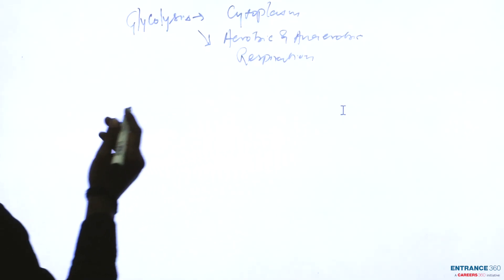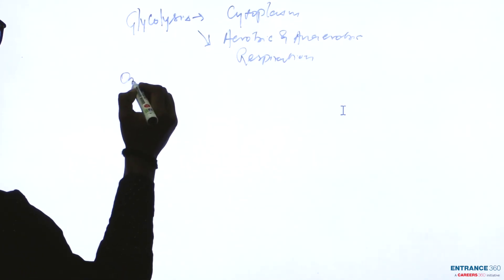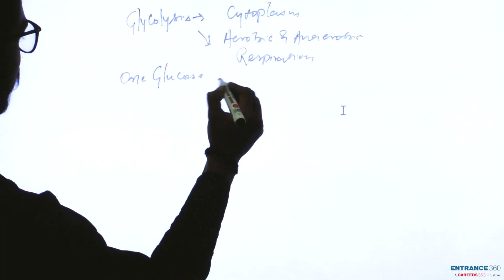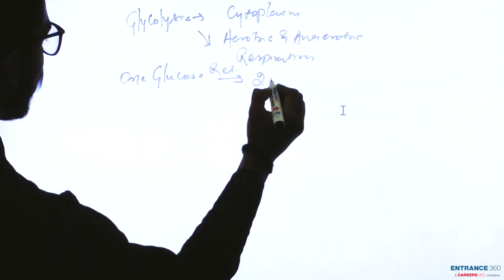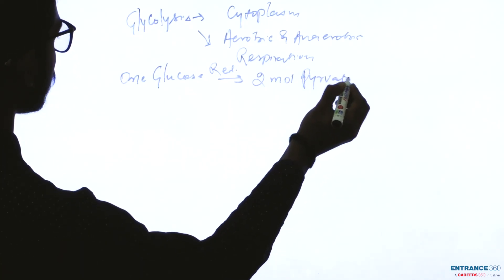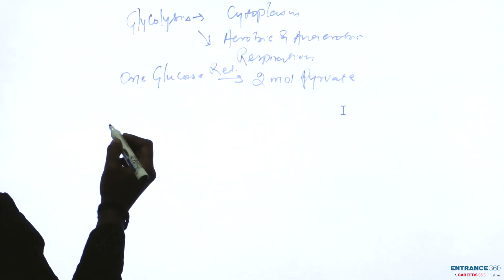So basically in glycolysis, one molecule of glucose will reduce to two molecules of pyruvate. So students, now let's understand with the help of our equation.